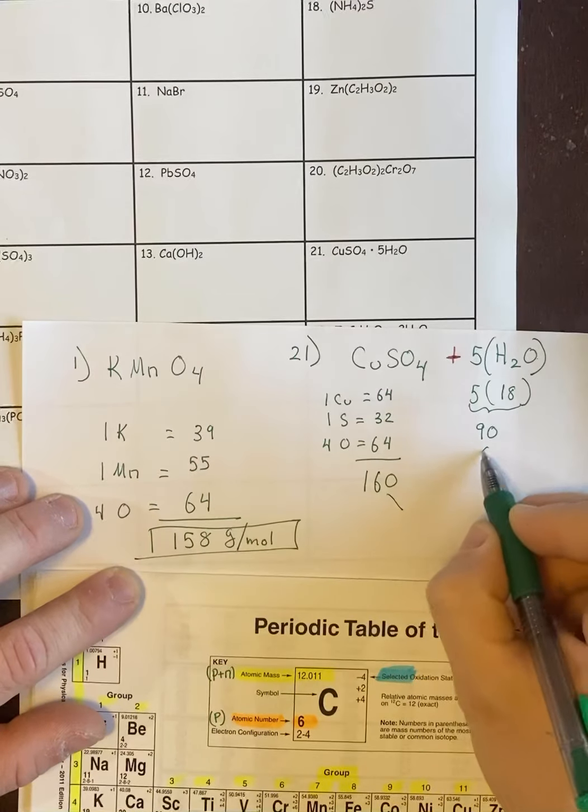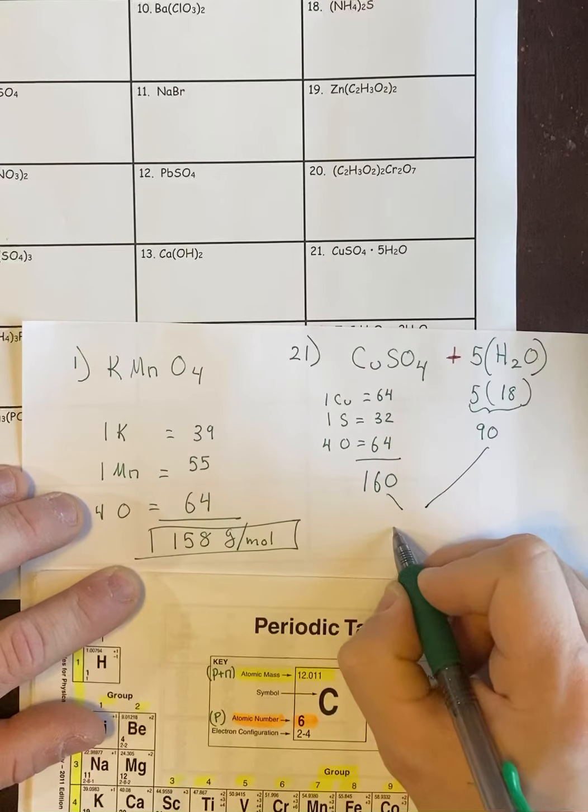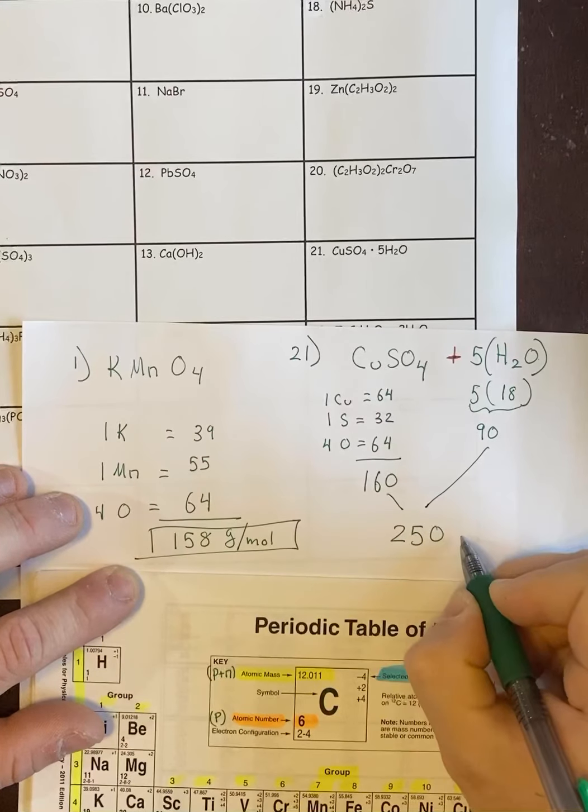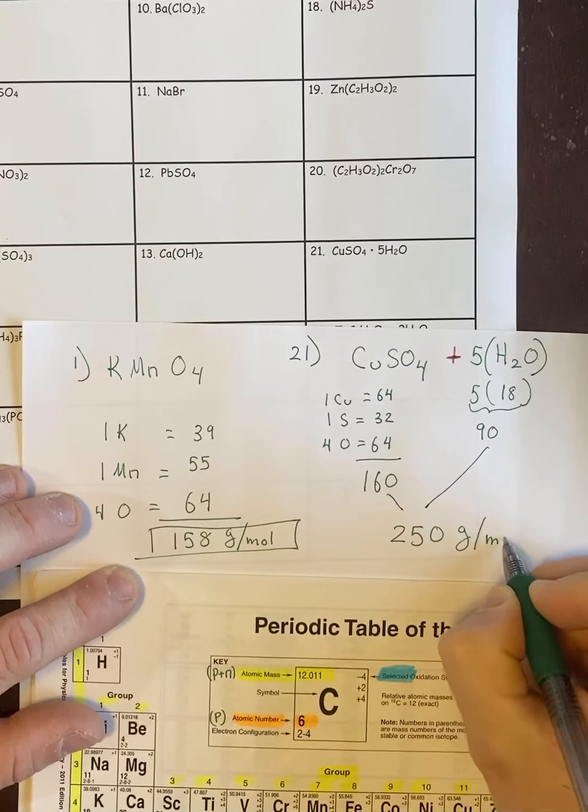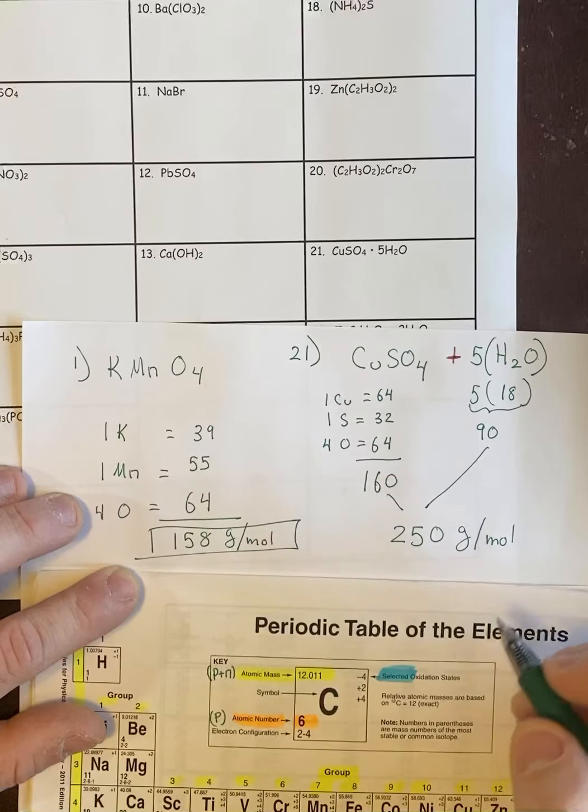So now if we take the 160 and the 90 from the water and add them together, we get 250 grams per mole. And so that's the way you're going to do it.